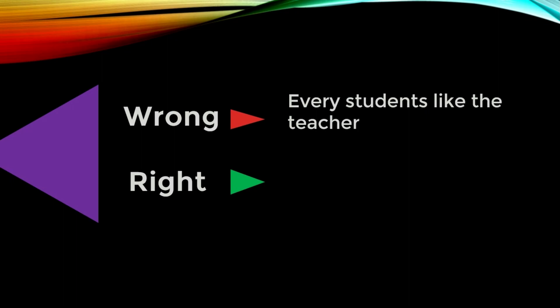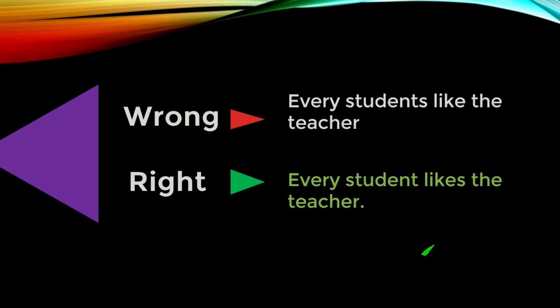Next example uses the word 'every' with a plural noun — for example, 'every students.' Using 'students' is not right, as 'every' is already telling us that all the students are individually involved. Writing plural twice is unnecessary. Also, when we have a singular noun, we add 's' to the verb. So 'like' becomes: 'Every student likes the teacher.'